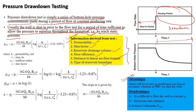Coming to advantages: there will be no loss in production and no loss in revenue. In pressure buildup, we shut the well in, whereas in pressure drawdown we are allowing the well to flow. That is one of the major advantages of a pressure drawdown test.